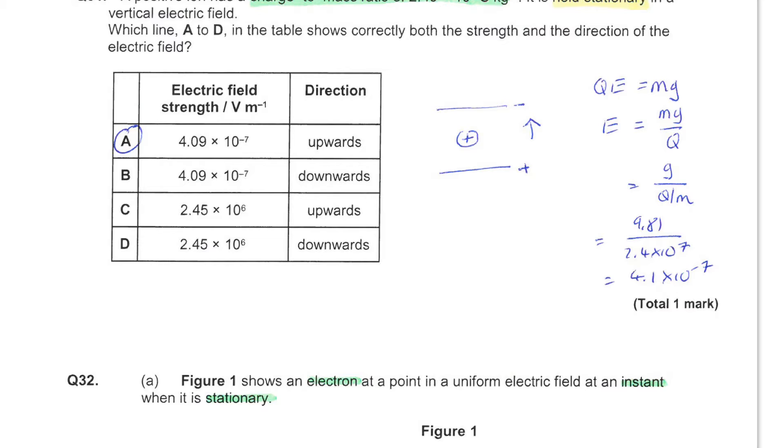A positive ion has a charge-to-mass ratio of 2.4 times 10 to the 7 coulombs per kilogram. This ion is held stationary in a vertical electric field. You need to choose which line in the table shows both the strength and the direction of this electric field. First, you need to get your head around the situation. Here is a positive ion, and I have drawn two plates to provide a vertical electric field.